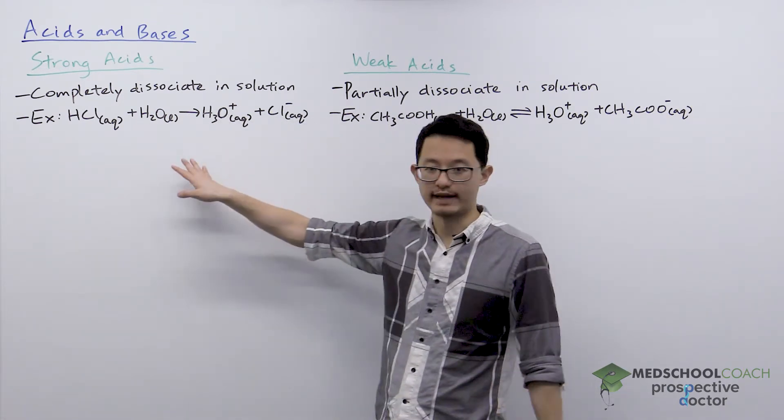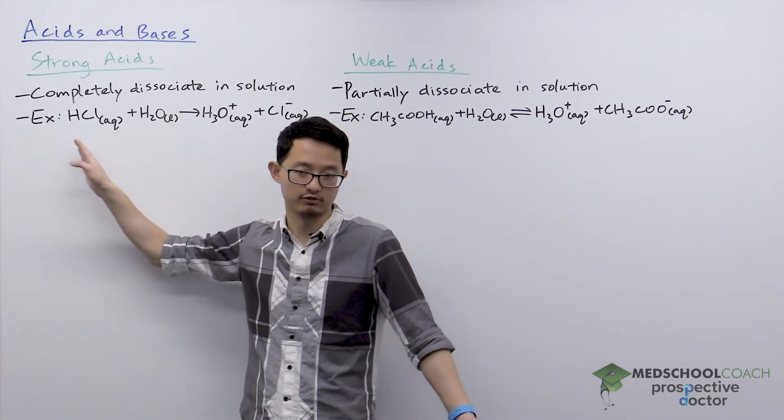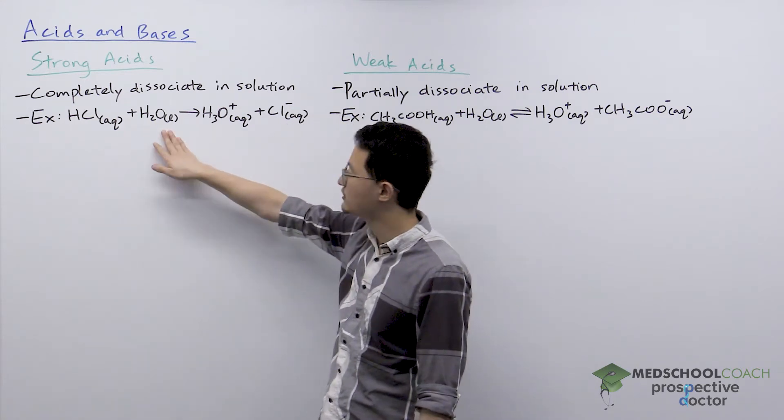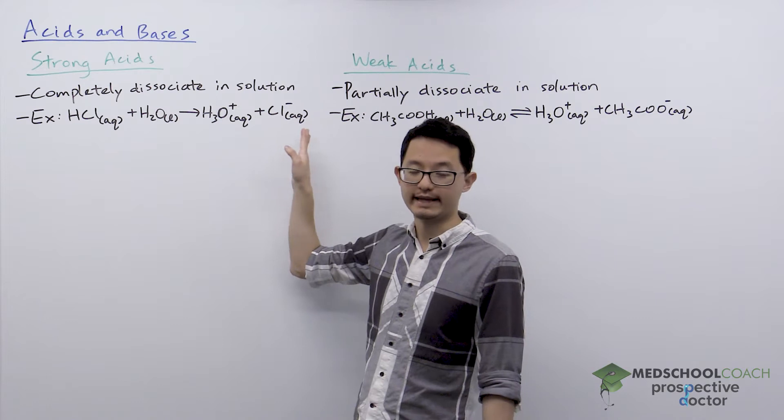So let's look more at strong acids. We've got our example here of HCl, the typical strong acid. Hydrochloric acid, when added into water, will form hydronium ions and chloride anions.